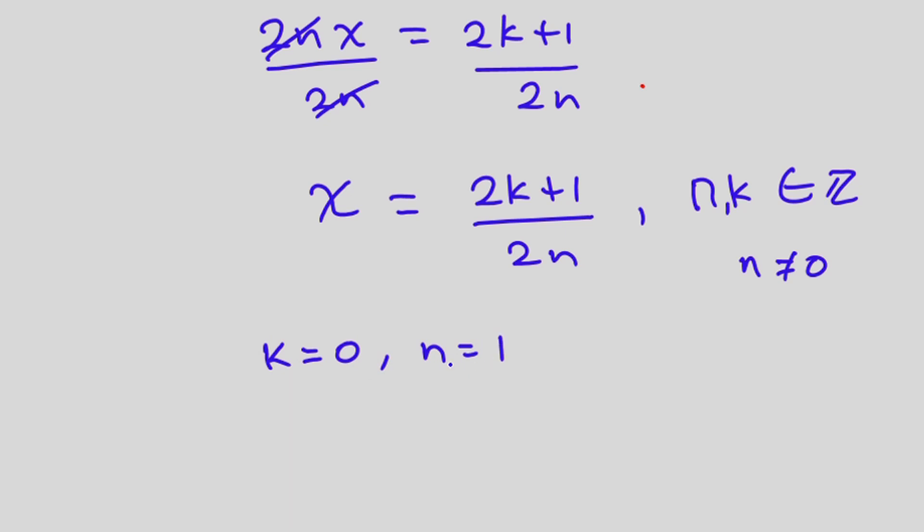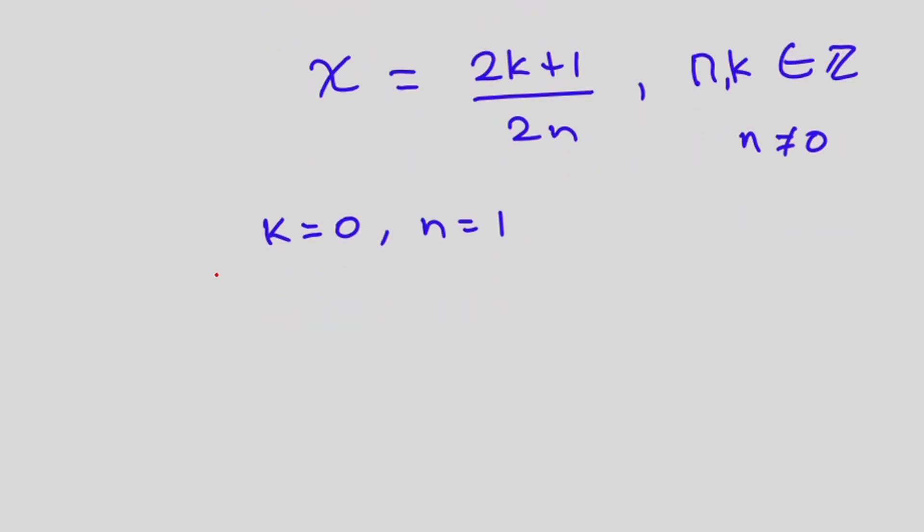Now let's figure out what x will be when k is 0 and n is equal to 1. So we will have 2 times 0 which is 0 plus 1 divided by 2 times 1 which is 2. So this is what we have for x.